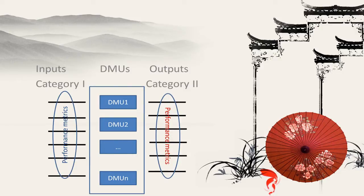This is a general DEA problem or a DEA model. In the middle, you have a set of DMUs. In our case, for example, we have 17 laptops, so N here is equal to 17. On the left-hand side, you have the inputs or our Category 1 measures, and on the right-hand side, you have the outputs, the Category 2 measures. If you think of this DEA problem as a production process, the inputs come in from the left and the outputs come out from the right.